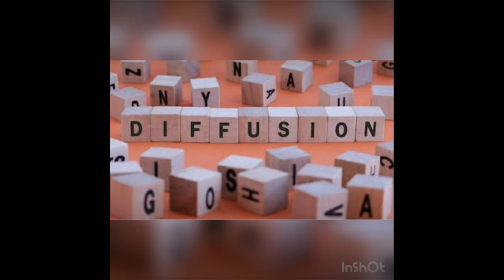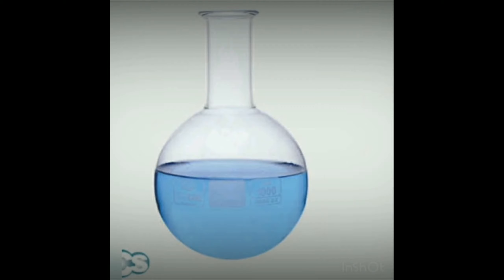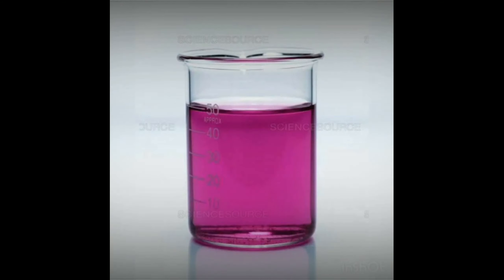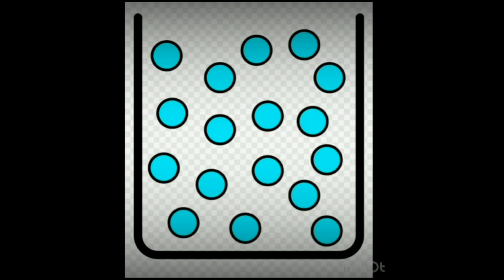Diffusion in liquids occurs at a higher rate. Take a 250 ml round-bottom flask with two-thirds water, use a dropper to put a few drops of potassium permanganate solution slowly along the side. The potassium permanganate diffuses into the water, giving it a pink or purple color within seconds. Liquid particles are less closely packed, so diffusion is faster, and intermolecular forces between liquid particles are weaker than in solids.